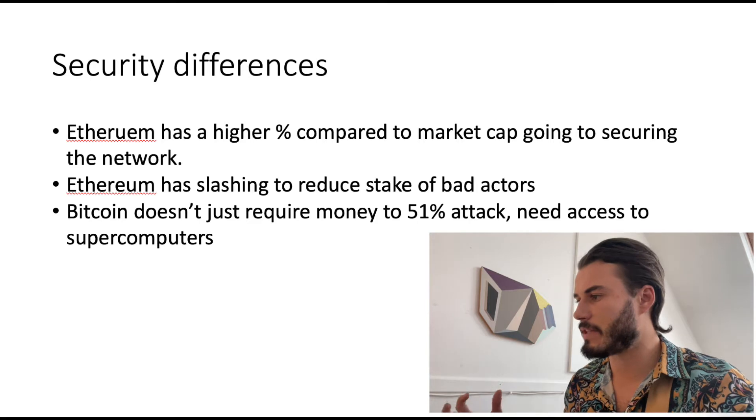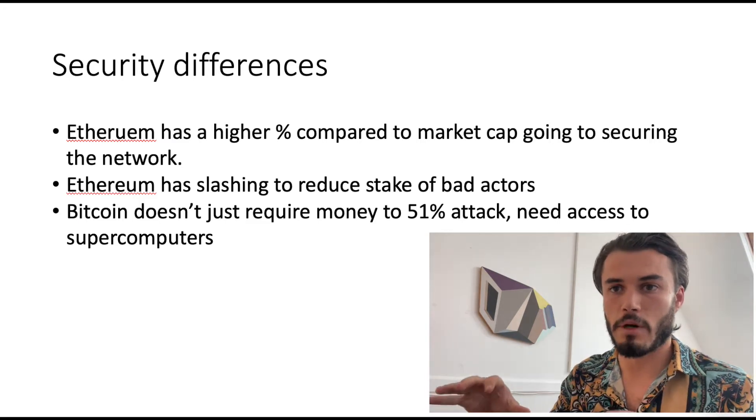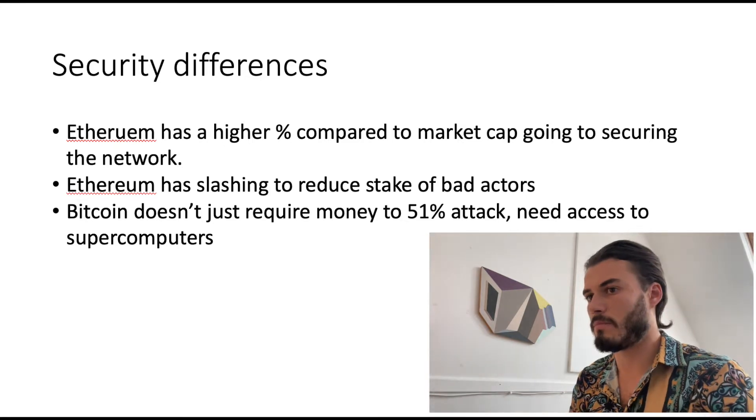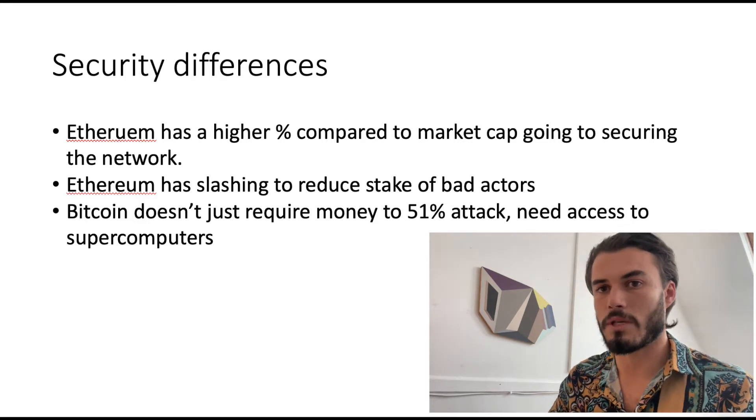Here's where things get interesting — the security differences between proof of work and proof of stake. I always thought that Bitcoin, having the largest computer network and most hash power in the world, must have the most secure network. To 51% attack it you'd need 51% of the hash power of the biggest computer network in the world — seems very difficult. But then I listened to a podcast with Justin Drake, one of the Ethereum Foundation developers, and he opened up my mind to the actual advantages of proof of stake. Ethereum has a higher percentage of its market cap going toward securing the network than Bitcoin does.